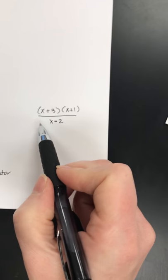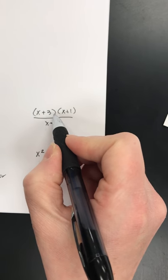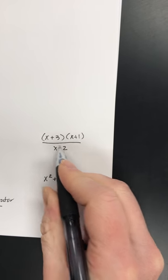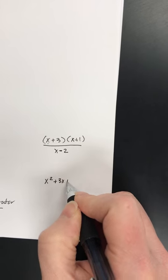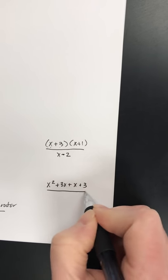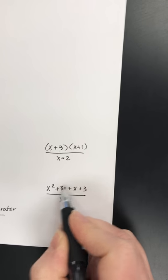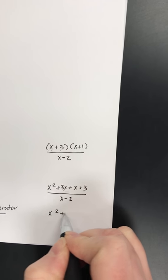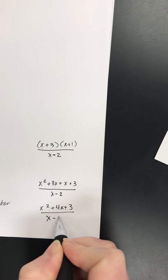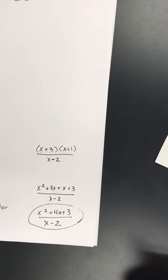I'm going to have to do my work over here. So if I have x times x, I get x squared. And then if I have plus 3 times x, I get plus 3x. And then I have an x and a plus 1, so that's plus x. And then 3 and 1 is plus 3 over x minus 2. And if I can combine my like terms, I'll get x squared plus 4x plus 3 over x minus 2. And that would be my final answer.